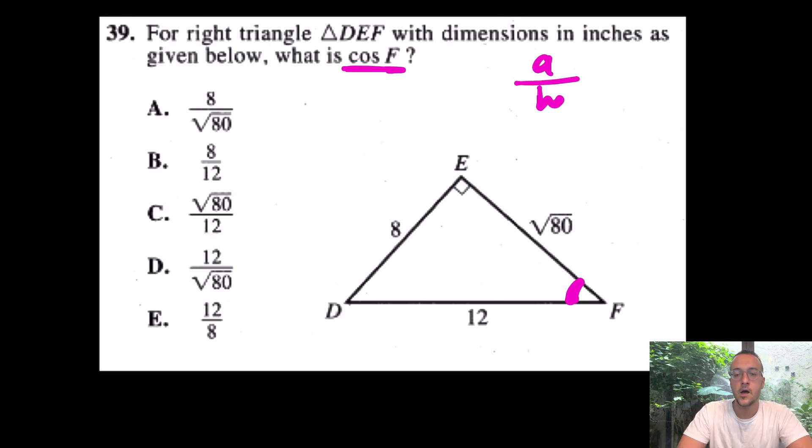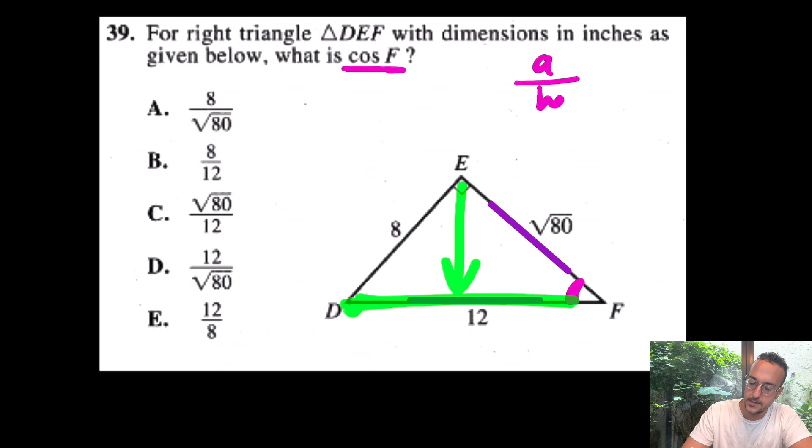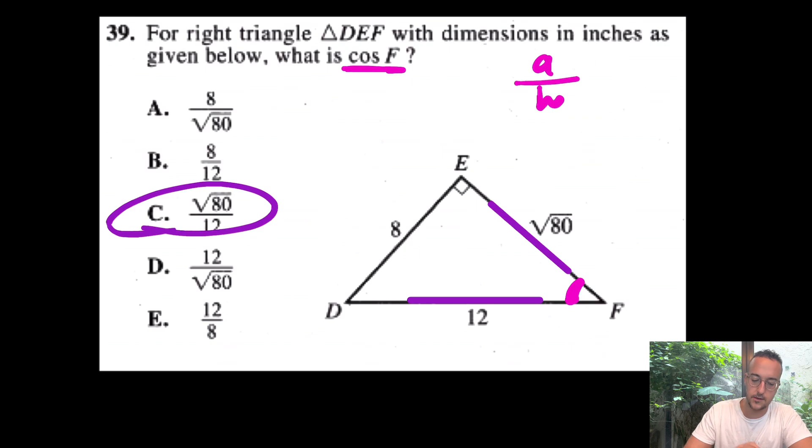In that case, we can understand that this will be adjacent over hypotenuse. Which one is adjacent? Which one is hypotenuse? Well, I would argue that this will be adjacent, and this will be hypotenuse. Of course, hypotenuse is opposite of the 90 degree angle, right? So please watch out for that. Again, opposite of the 90 degree, the longest side will be the hypotenuse. So adjacent over hypotenuse, I really like the answer choice of C.